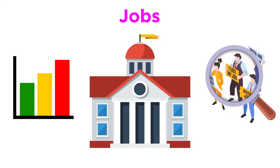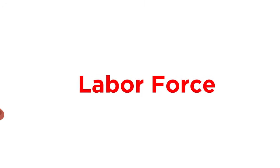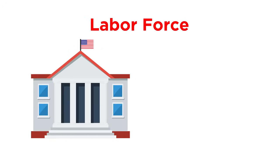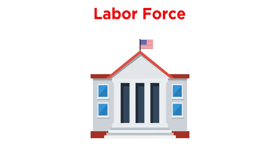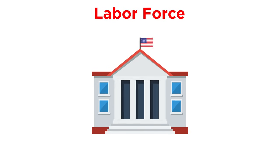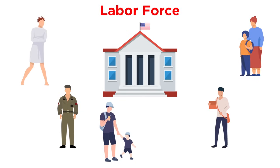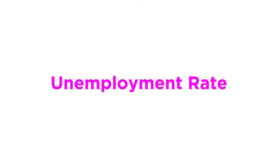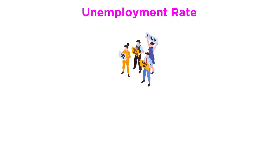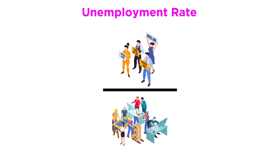In order to determine the unemployment rate, we must first look at the labor force. We will be looking at how the Bureau of Labor Statistics does this in the United States. As we learned in the previous tutorial, people who are not included in the labor force include full-time students, stay-at-home parents, retired people, active military, the institutionalized, and those who have given up looking for employment for an extended period of time. To calculate the unemployment rate, you take the number of unemployed divided by the labor force times 100.